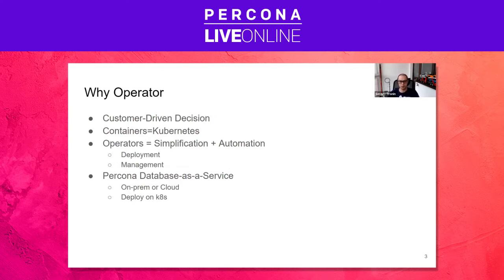The fourth bullet here says Percona database as a service. At Percona, we have a DBaaS - database as a service - and it is open source. You can deploy it in the cloud, on-prem, wherever you want. What's happening in the background is that our DBaaS deploys the database using our operators on Kubernetes. So it is a strategic move for us to invest more in operators so that our DBaaS can thrive and help users manage their databases easily.